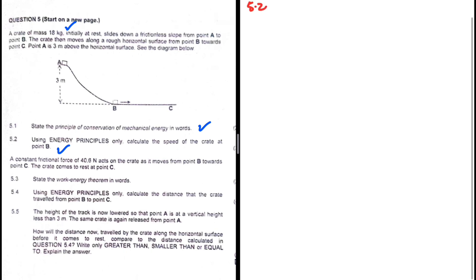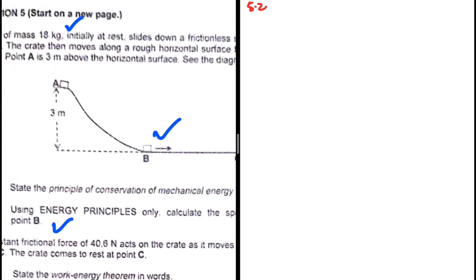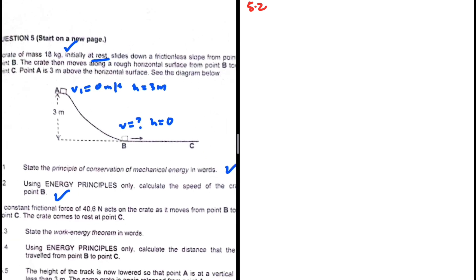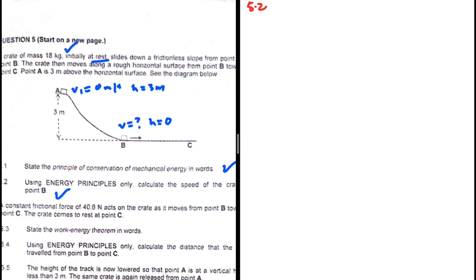What are we looking for? We're looking for the velocity or the speed of the crate at point B. At point B we have an unknown velocity, but at point A we have a velocity of zero meters per second because initially it is at rest. At A we have a height of 3 meters, and at B our height is zero. So clearly we can use conservation of mechanical energy here because our slope is frictionless.